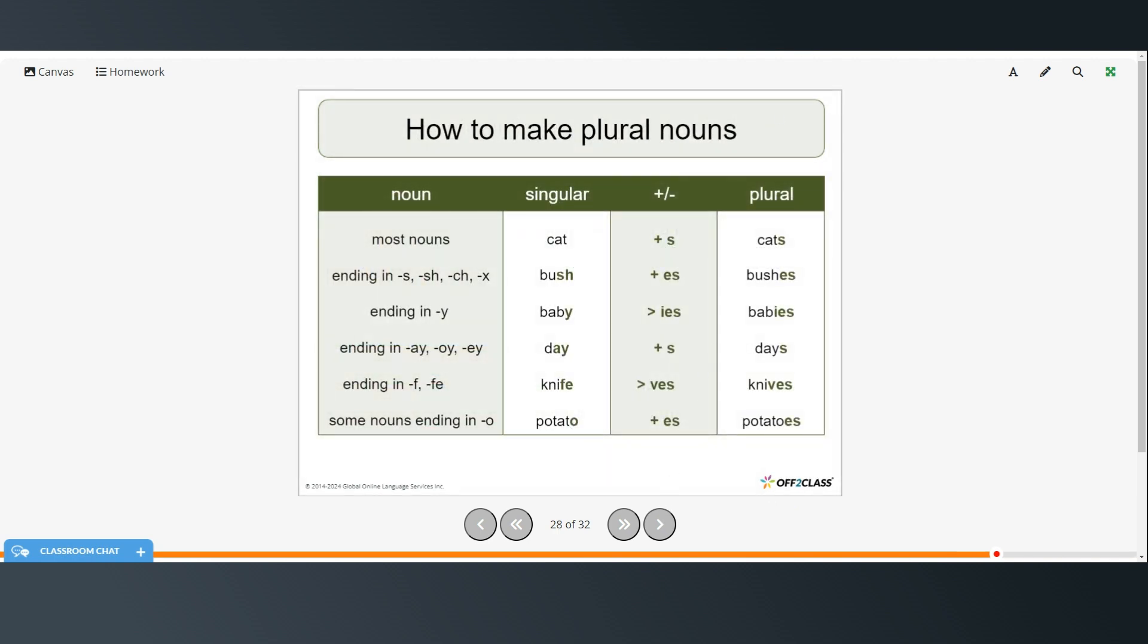Alright, so here's just a review of the different rules for how to make plural nouns. So you want to memorize the rules on this slide. So for most nouns, you're just going to add an S. If a noun ends in an S, S-H, C-H, or X, you add E-S. If it ends in a Y, you change the Y to an I and add E-S. But if it ends in A-Y, O-Y, or E-Y, then you just add an S. F or F-E, you drop the ending and add V-E-S. And some nouns, if you get O, you add an E-S.